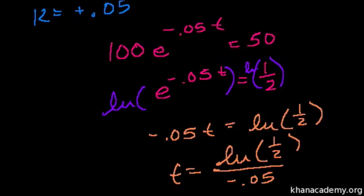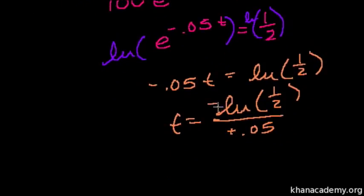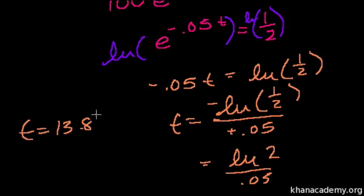So 0.5, the natural log... actually, I could multiply numerator and denominator by negative 1 to make this cleaner. A minus in front of a natural log is the same as the log of the inverse. So the natural log of 2 over 0.05 equals 13.86.